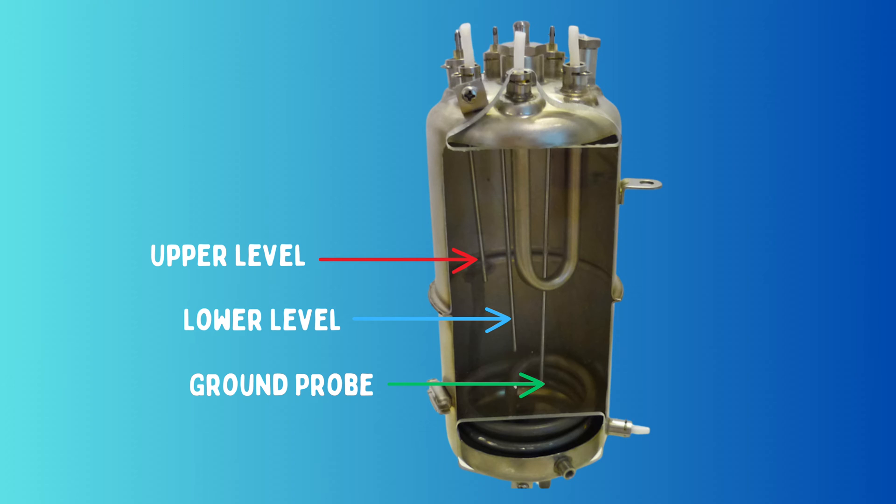The lower level probe with the blue wire is there to sense if the boiler can be switched on. You can see the tip is positioned just above the element to ensure it's fully submerged before it's allowed to get hot. The upper probe with the red wire tells when the boiler has enough water and can switch off the pump. This is about the halfway point.